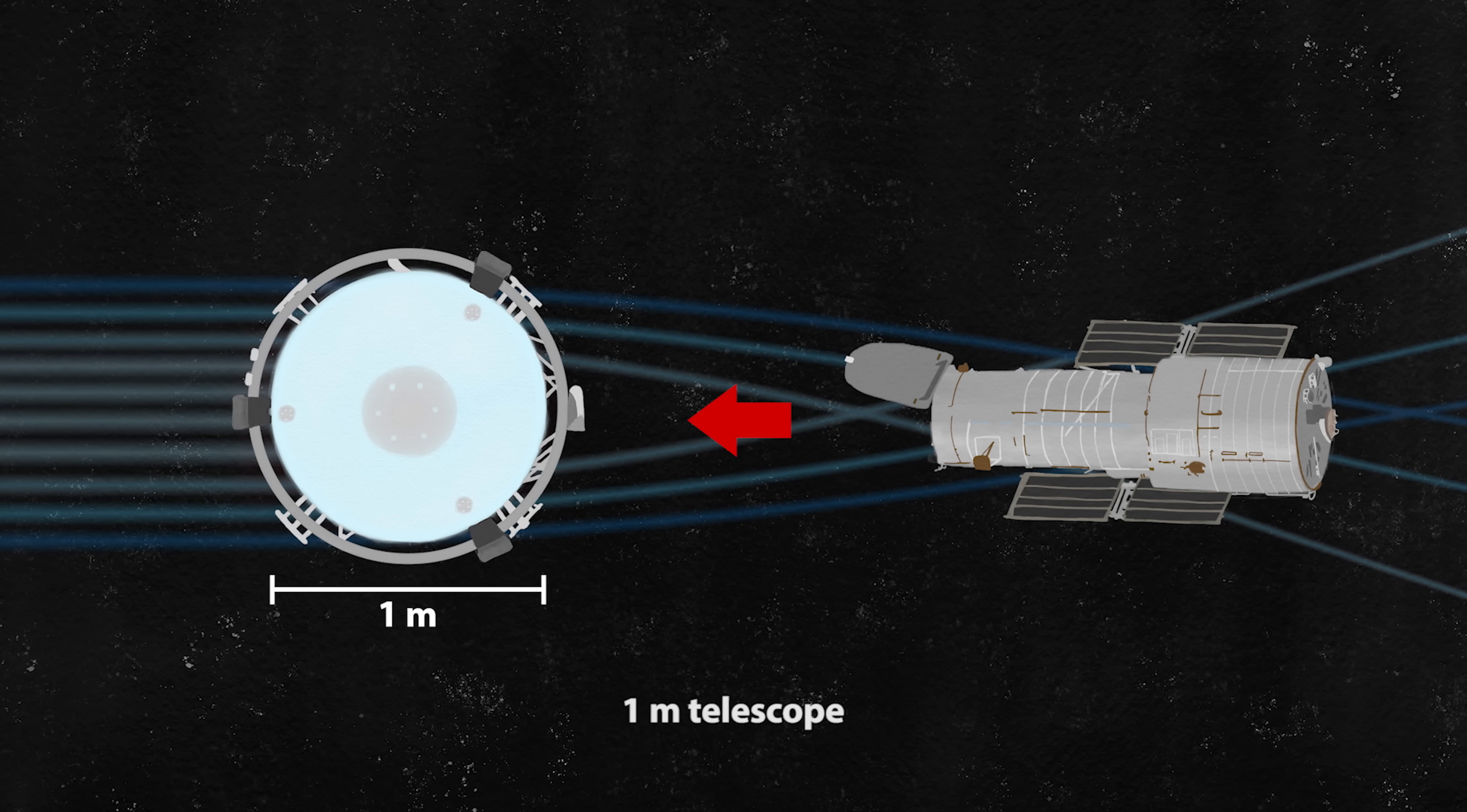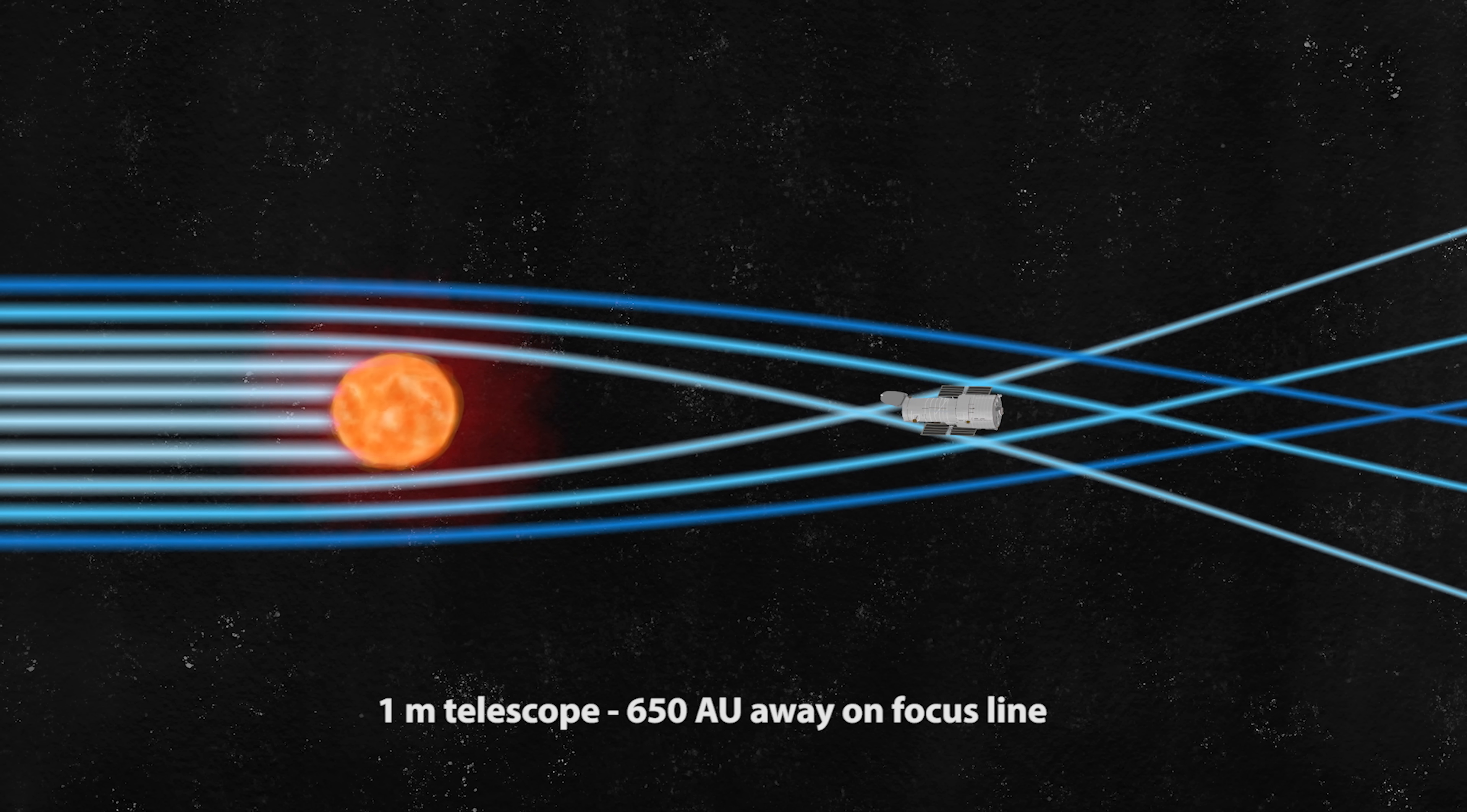If we take a 1 meter telescope, place it at 650 AU away on the focus line, targeting an exoplanet 100 light years away, how much magnification and resolving power do you think it will have? From a fuzzy dot to a slightly larger fuzzy dot? Not even close.